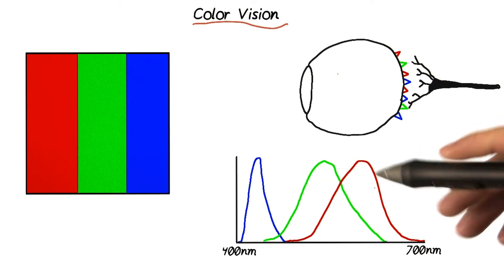All other colors are just how our brain interprets photons that stimulate multiple types of cone cells at once.